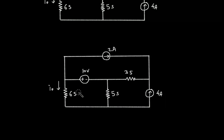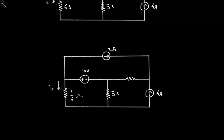So this 6 Siemens will be converted into Ohms as 1/6 Ohm. This will be 1/3 Ohm, and this will be 1/5 Ohm. So we have 1/6 Ohm, 1/3 Ohm, and 1/5 Ohm.